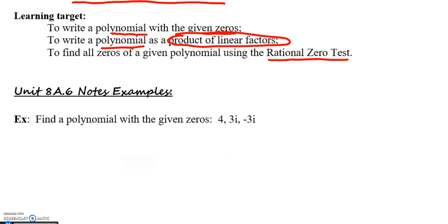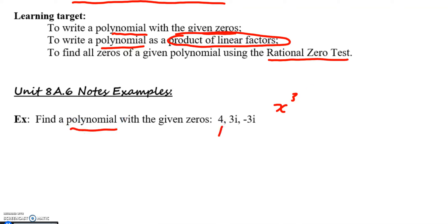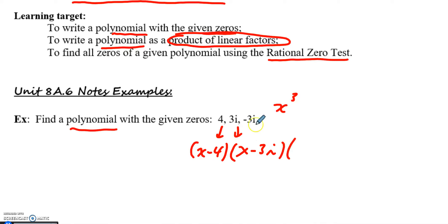For example, in this first one, if we want to find a polynomial with the given zeros, I have three zeros here, two of which are imaginary. If I have three zeros, that means my polynomial is probably some kind of cubic. The degree is the max number of zeros you can have. So if I want to find the polynomial, we need to think backwards. A zero of four came from x minus four, a zero of positive 3i came from x minus 3i, and the last one came from x plus 3i.